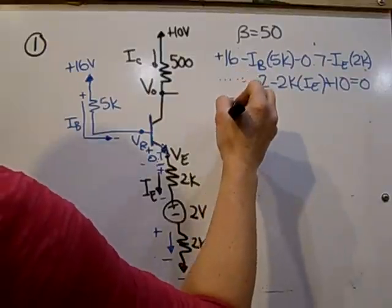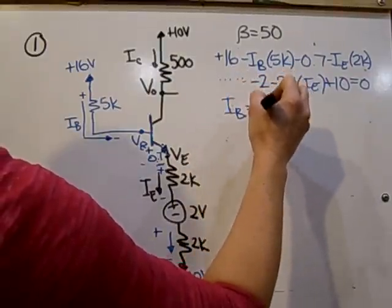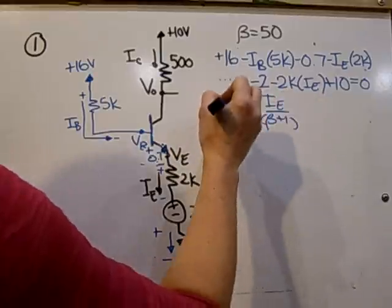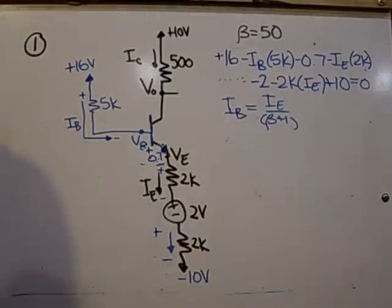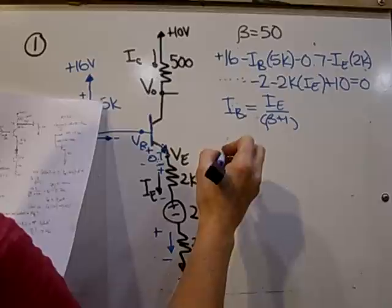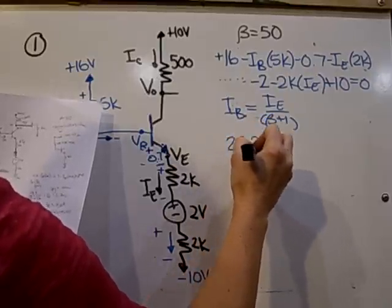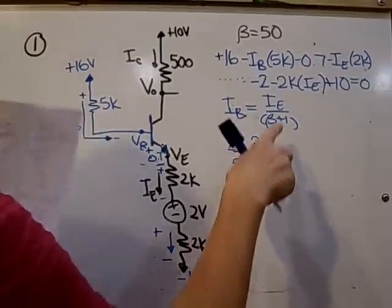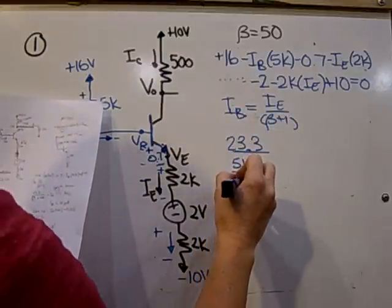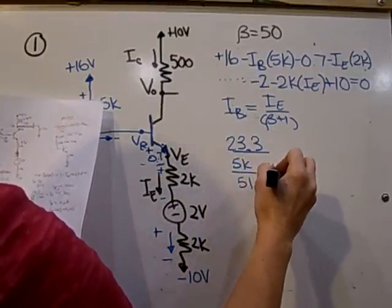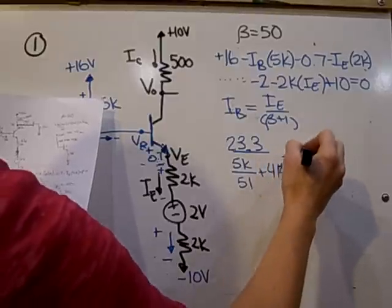Now the relationship between IB and IE needs to be used, and IB is equal to IE over beta plus 1. Using this equation with that equation, substituting in IB gives you one equation for IE. So combining all the voltages gives 23.3 volts, divided by the 5k, beta was given as 50, so over 51, beta plus 1, plus 4k. And that equals IE.